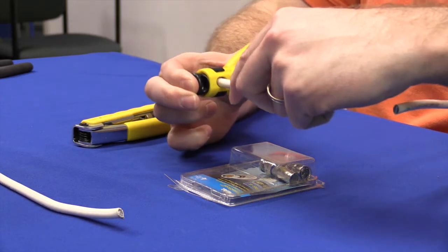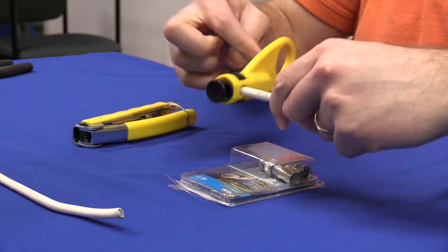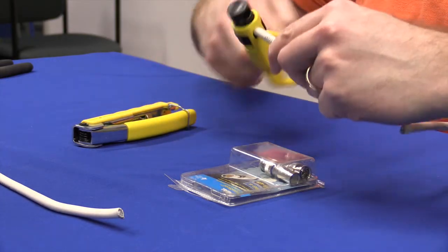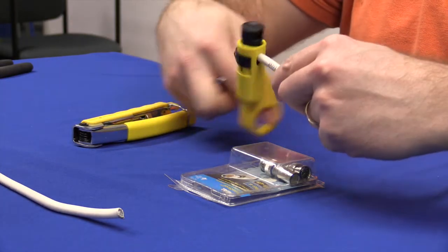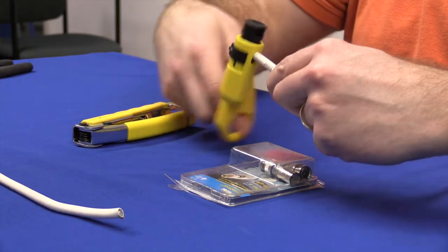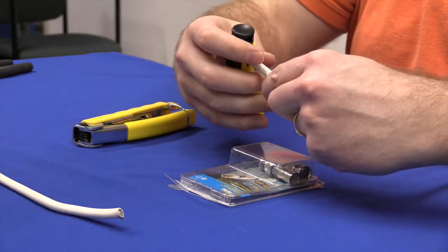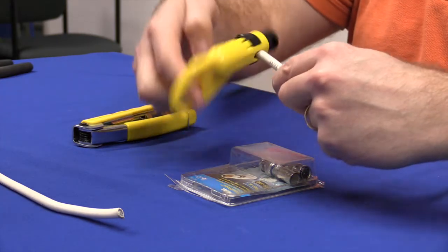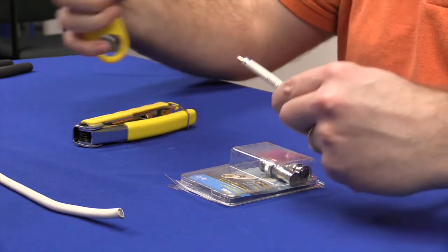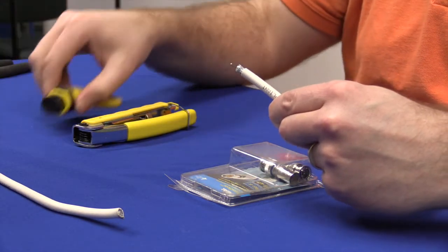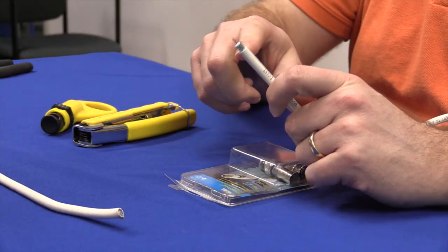I stick one cable inside. I release. Then with my thumb, I twist around. There's razor blades in here that are actually cutting. Once you've twisted a few times and it feels rather loose, you simply pull off, and you'll notice that it has stripped a couple of layers.